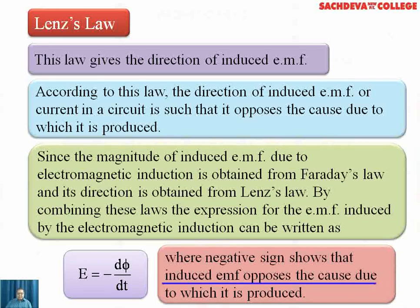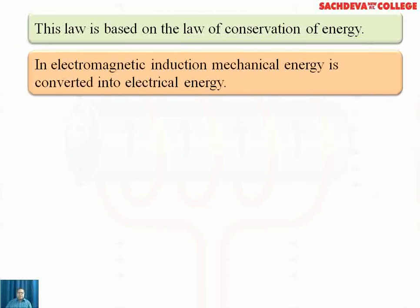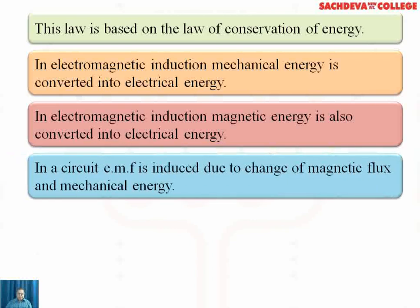The magnitude of induced EMF is obtained from Faraday's law, and its direction is obtained from Lenz's law. By combining both laws, the expression for the induced EMF is E = −dφ/dt. The negative sign indicates that the induced EMF opposes the change in flux. Lenz's law is based on the law of conservation of energy — energy is neither created nor destroyed. In electromagnetic induction, mechanical energy is converted into electrical energy.